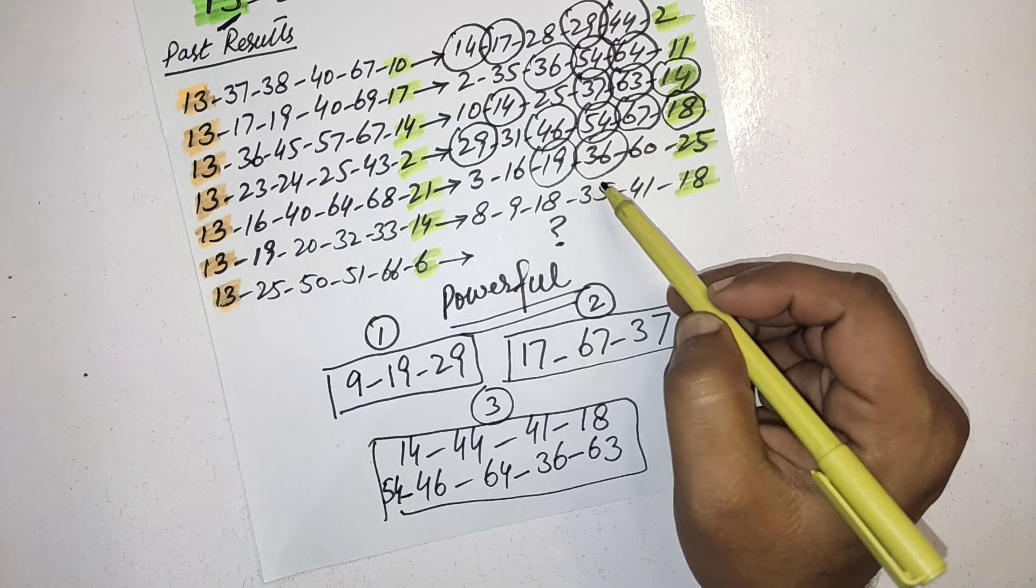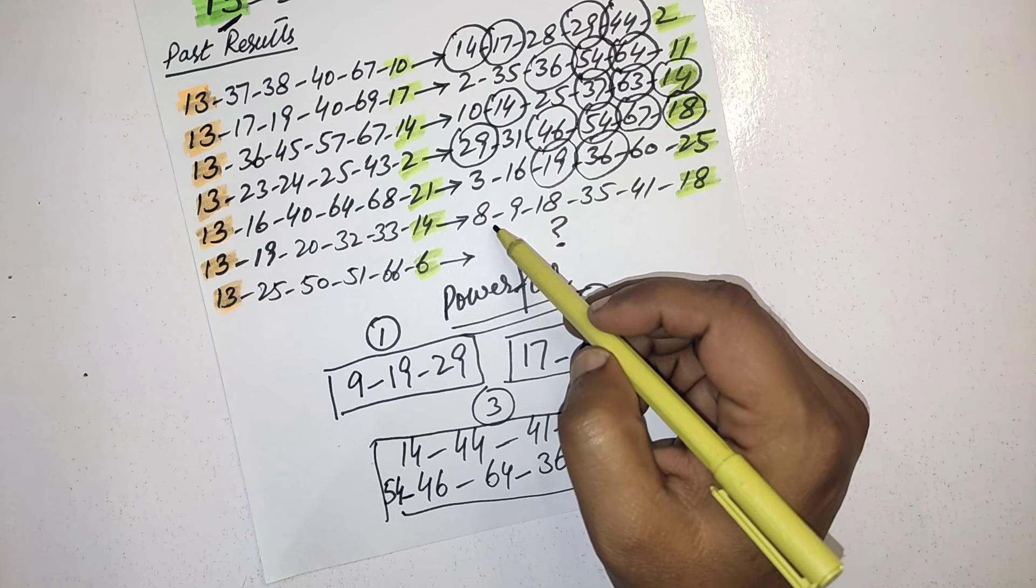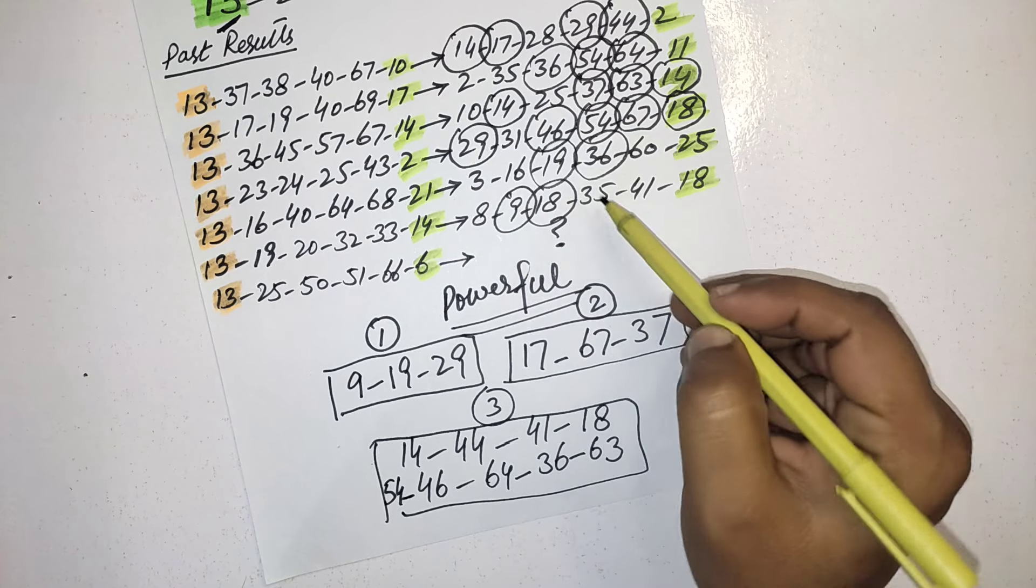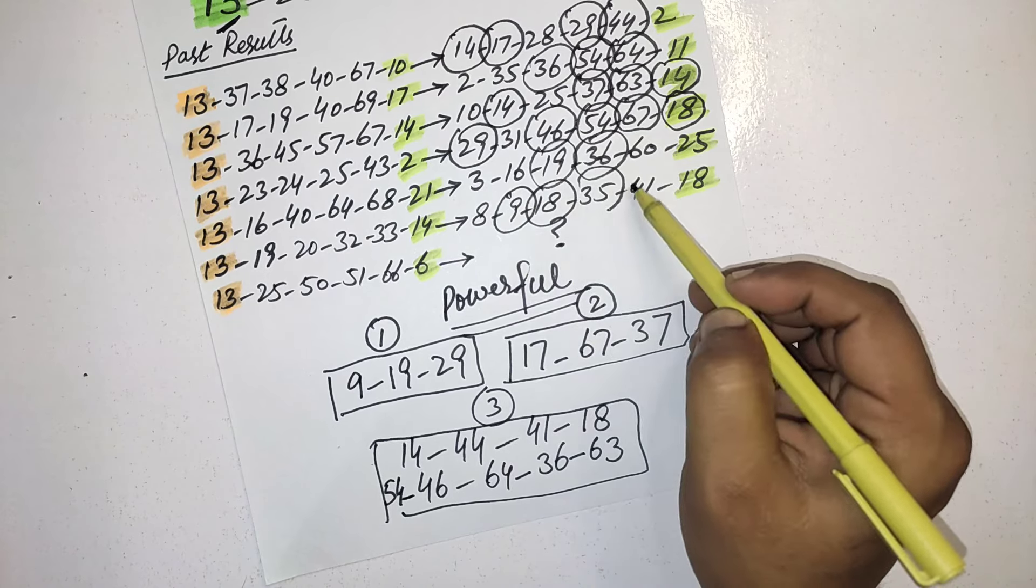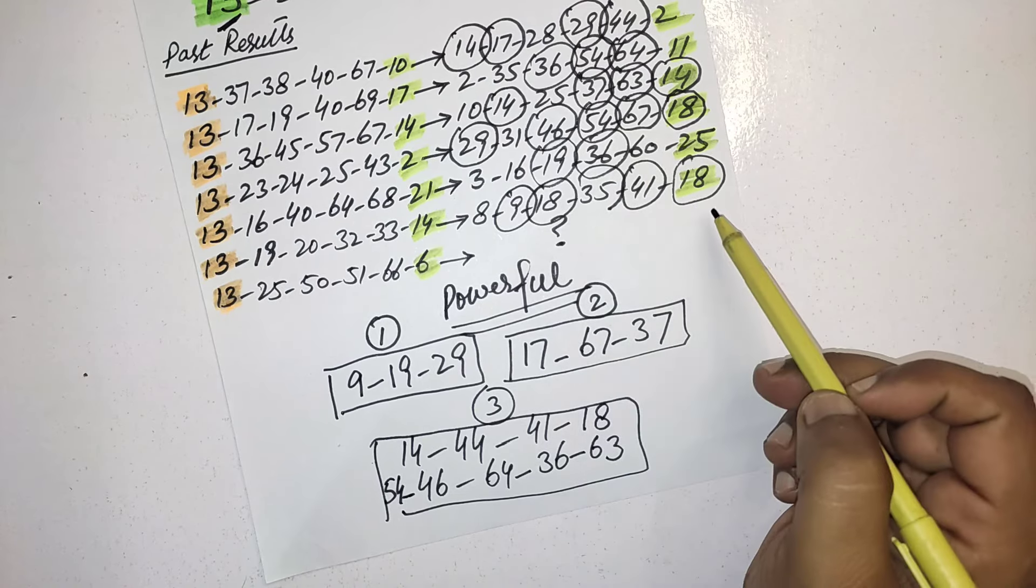In next row 19 and 36 in this row, so only two numbers they picked from here. In previous latest result 9, 18, 41, and 18 again you can see three numbers from here. One number 18 they picked from these 15 numbers.